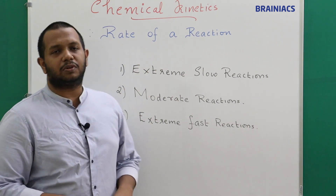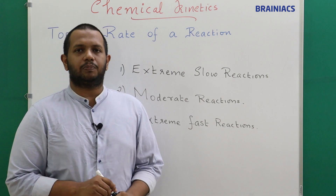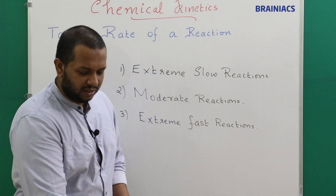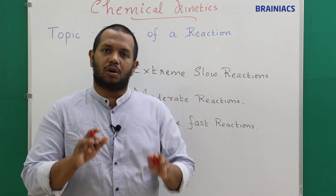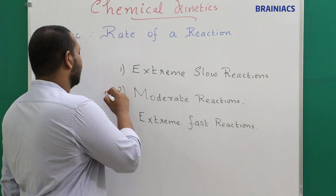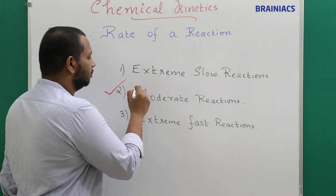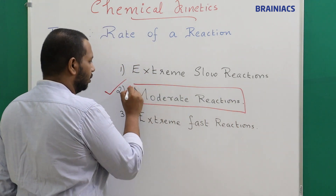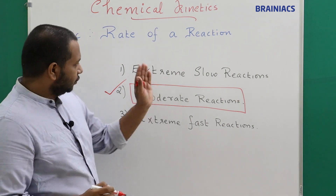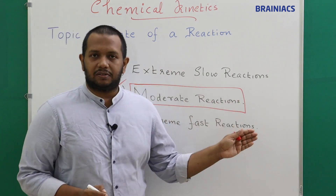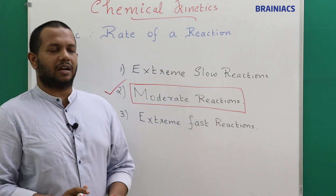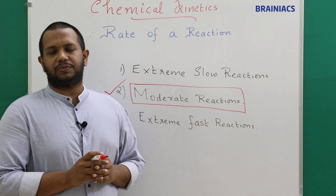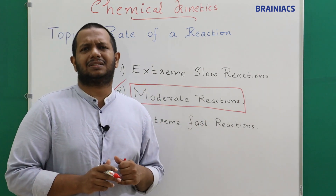Out of all three categories, you will only be able to measure the rate of moderate reactions. For extreme slow reactions, it is not possible to measure the rate. For extreme fast reactions also, it is not possible to measure the rate. The question is: why is that?